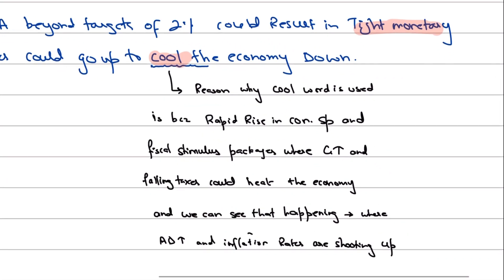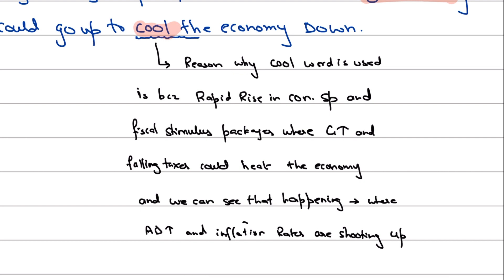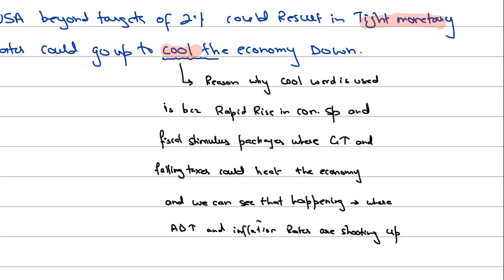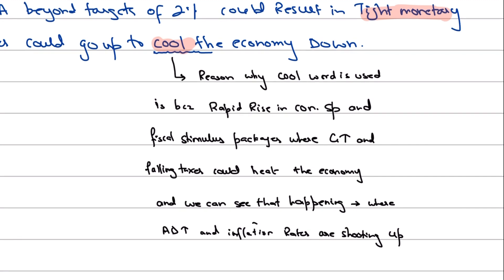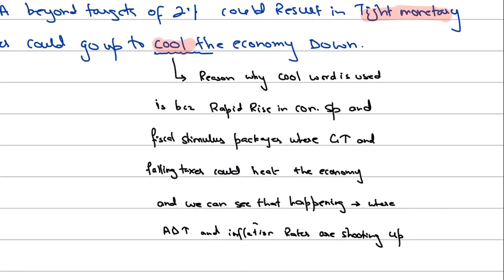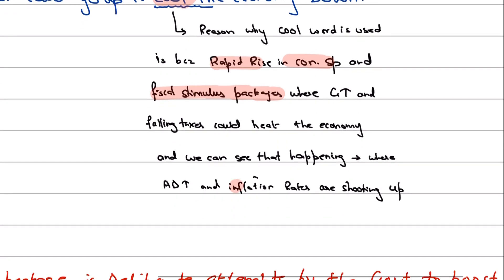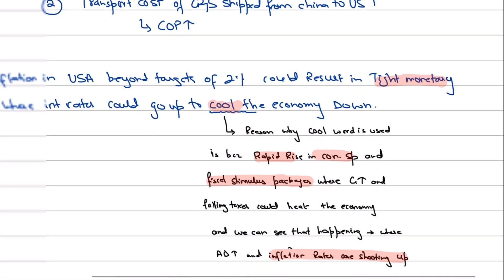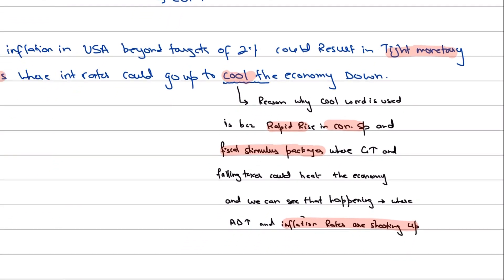The word 'cool the economy down' is used because in economic terms we say the economy is overheating. When the economy exceeds the level of full employment of output, inflation gets out of control. So 'cool down' refers to the rapid rise in inflation that is causing the economy to heat itself. Because there was a rapid rise in consumer spending coupled with fiscal stimulus packages, the economy was heating and inflation rates were shooting. That's why tight monetary policy is implemented to bring AD down.